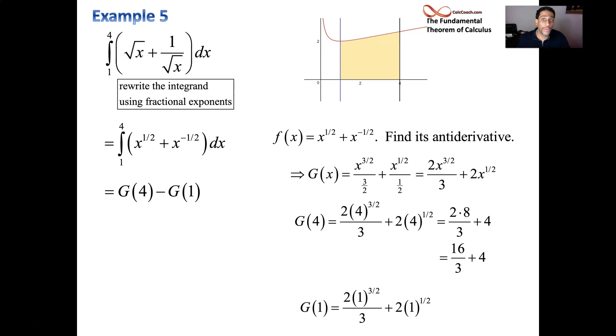Plugging the 1 in, we're just going to get 1. You know, 1 to the 3 half is a 1, 1 to the 1 half is a 1. So this is 2 thirds plus 2. So we take our upper limit evaluation and we subtract our lower limit evaluation. And therefore we could pair up these thirds with each other. 16 thirds take away 2 thirds, 14 thirds. 4 take away 2 is a 2. The common denominator is 3. We need 6 over 3 and 14 over 3. The final answer is that this area here, represented by the yellow shaded area, is 20 over 3. That would be our last example.